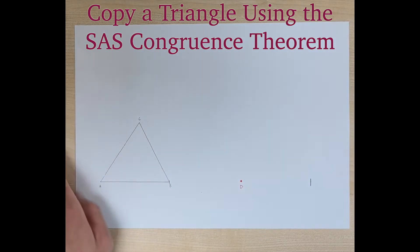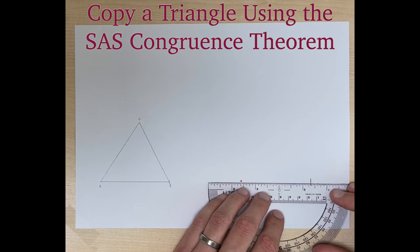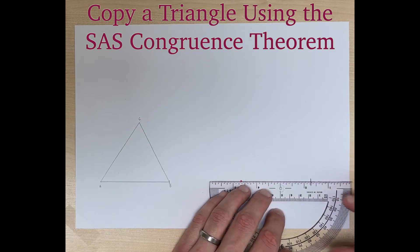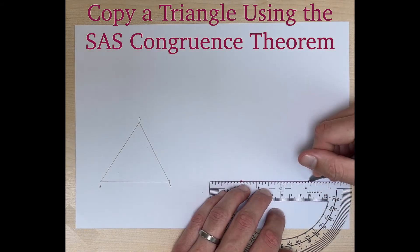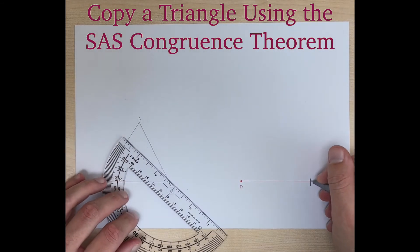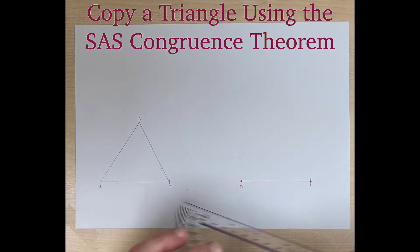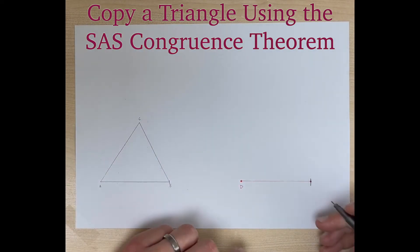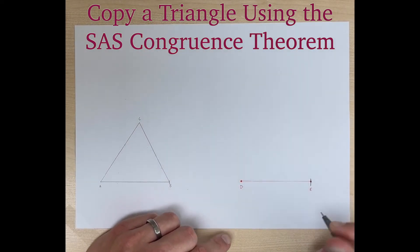Now we're going to take our straight edge and draw a line through our point with our arc. We can put a point right here and call that point E.